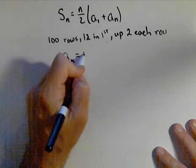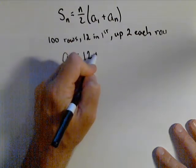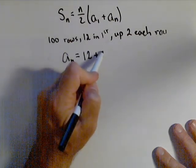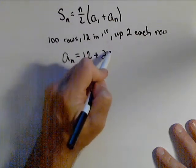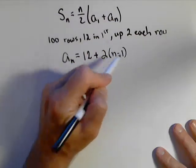So a_n is the first term, 12, plus my common difference—it goes up two each time—times n minus one.